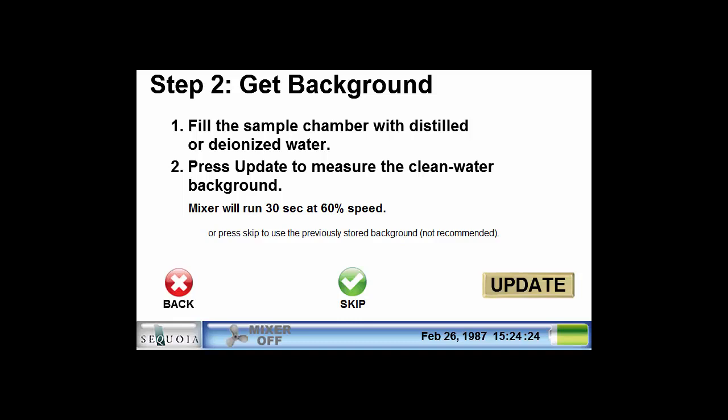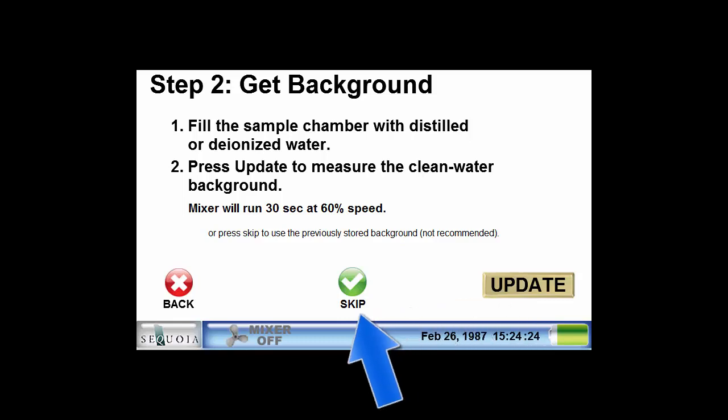Before making a background measurement, we must first make sure that the water, the mixing chamber, and the optical windows are clean and free of any bubbles. Pressing the update button will start the collection of a background sample. In certain situations, it may be necessary or desirable to not collect a new background before making a measurement. For example, you might want to make a second measurement of a sample without removing it from the mixing chamber. In this case, you could press the skip button to use the previously collected background that is stored in memory.